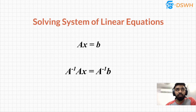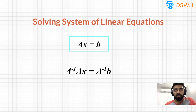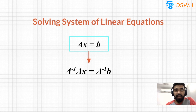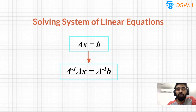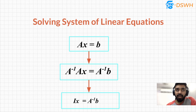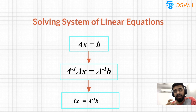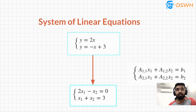Now when we talk about solving systems of linear equations, the inverse can be used directly. Given the equation Ax = b, to find x I can multiply A⁻¹ on both sides. Since A⁻¹ · A equals the identity matrix, the left-hand side becomes I·x, and since anything multiplied by the identity matrix remains as is, we get x = A⁻¹ · b. So if we know the inverse of A, we can solve for x.